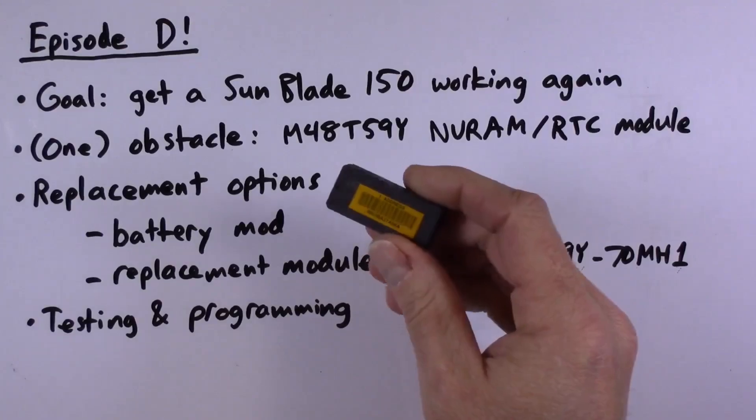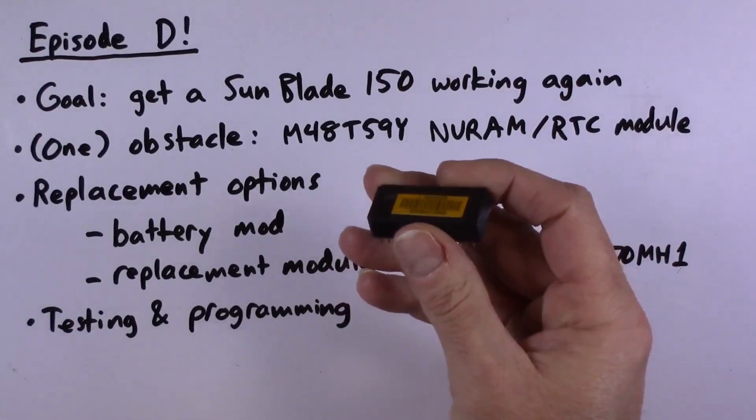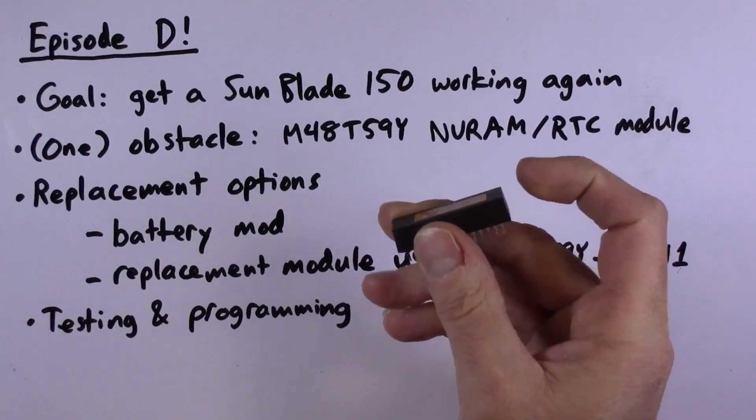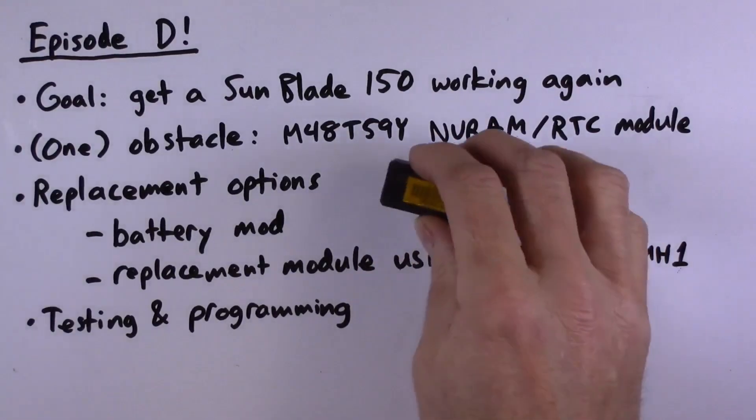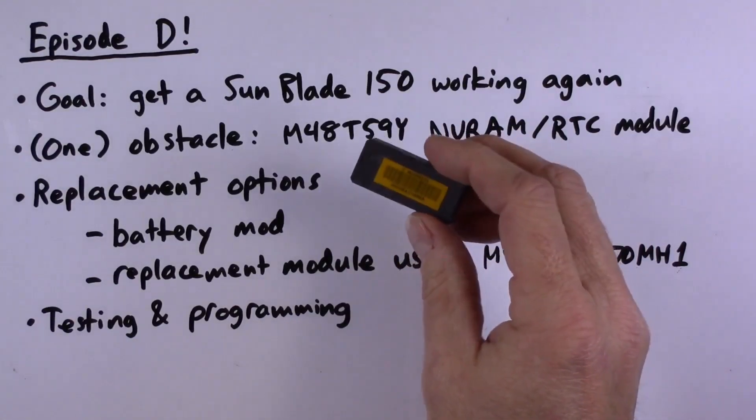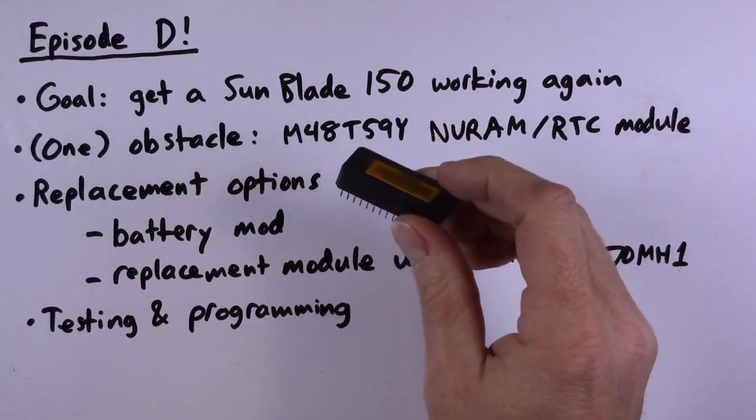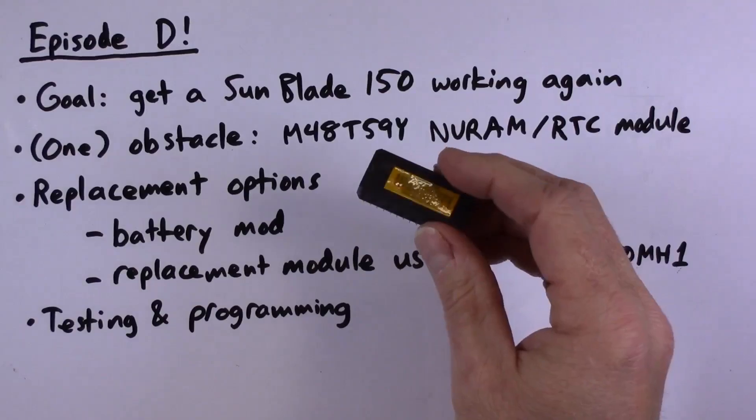Here is one of these M48T59Ys. The problem with these is that there is an internal battery that backs up the contents of the RAM, hence non-volatile RAM. However, the battery eventually runs out, and then the contents of the RAM are lost.